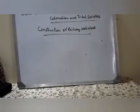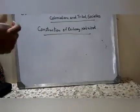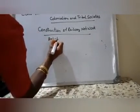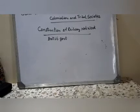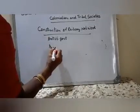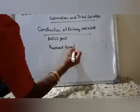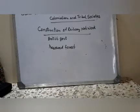Today let us study about the construction of the railway network. The construction of railways by the British government disturbed tribal life. To lay the railway tracks, a large part of forest was cleared, which forced many tribal people to move out of the forest. Some parts of the forest were declared as reserved forest — to be used by the government for their supply of timber — making it very difficult for tribals to survive.